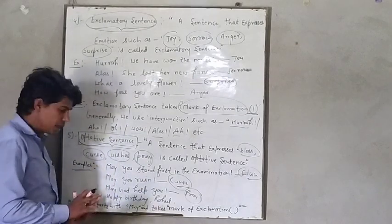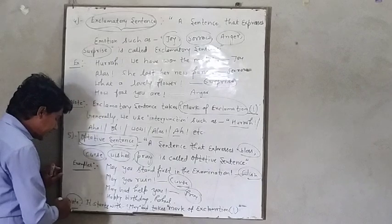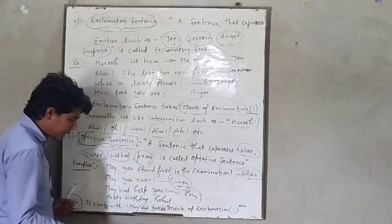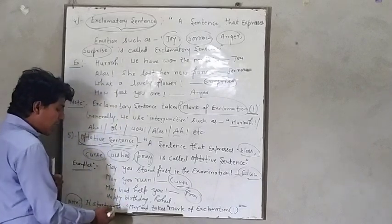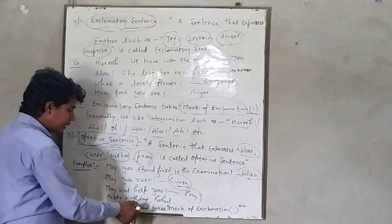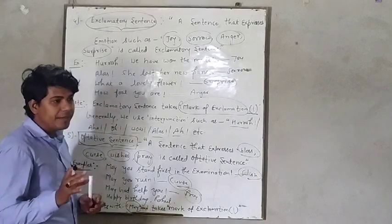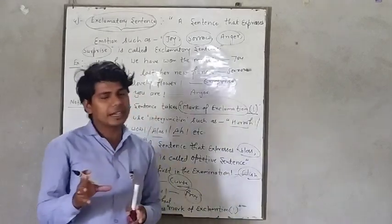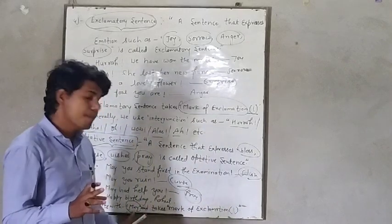Is that clear? Now, see the last one. I have mentioned here one most important point about the optative sentence. It starts with may. It means to say, whenever we write optative sentence, the first word we use may, modal of may.